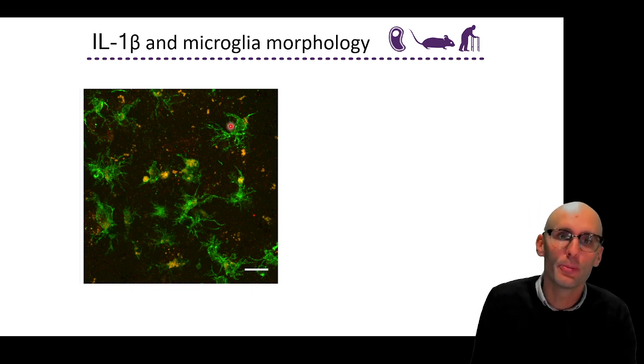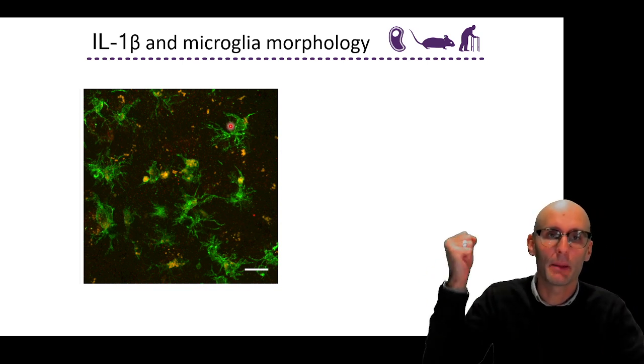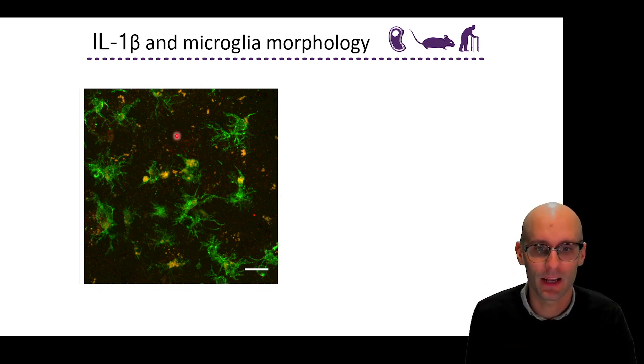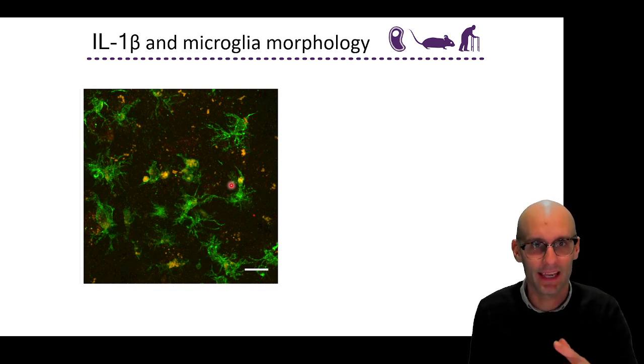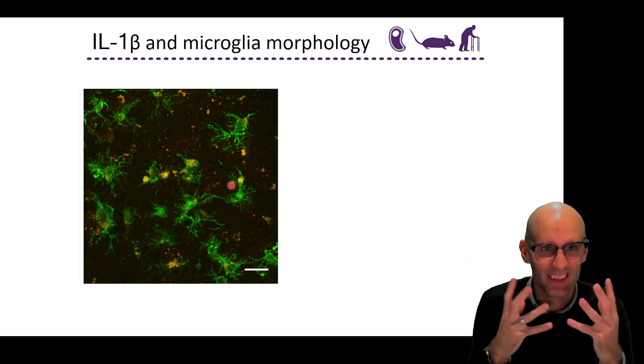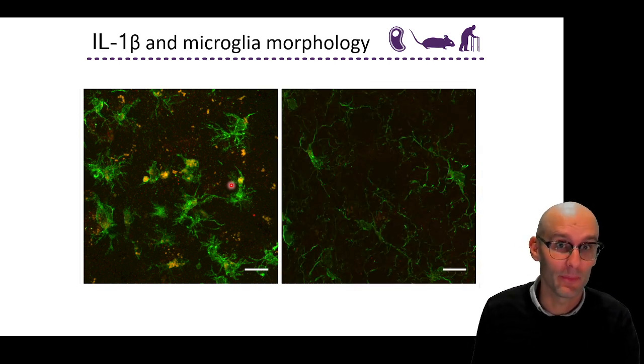And here we can see the microglia have very short processes. They look very angry. And they're yellow because they're both positive for red, which is interleukin 1 beta and green, which is microglia. So by being positive for both, they turn up yellow. So here we have some very small activated microglia that are positive for both interleukin 1 beta and they've pulled in their processes and they're very active and green.